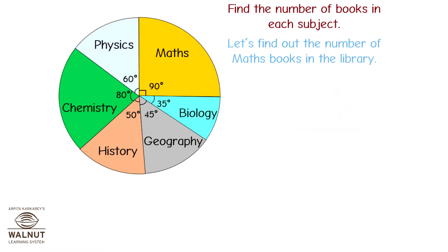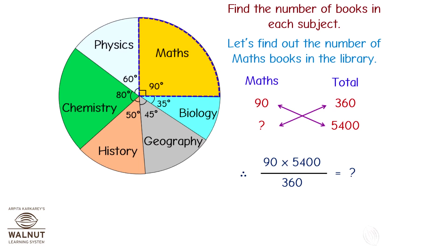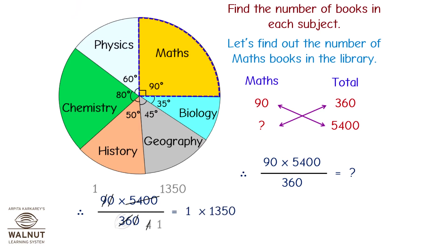Let's find out the number of maths books in the library. The angle of maths is 90 degrees out of 360 degrees, so we have to find the number of maths books out of 5,400. Set up the table and apply cross multiplication: 90 into 5,400 divided by 360. Simplify this and we get 1,350. That is, there are 1,350 mathematics books.